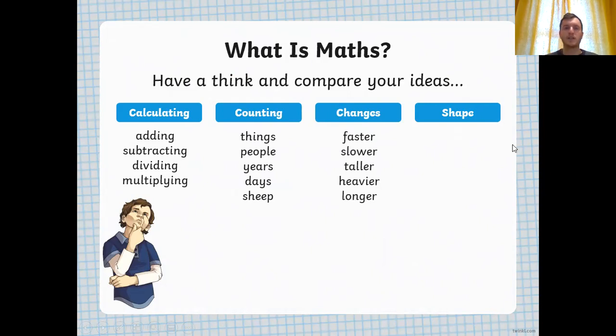We have changes. So you might say faster, slower, taller, heavier, longer. They don't necessarily seem like maths, but they are. They are comparing different objects, different amounts, different quantities, which all links to maths.